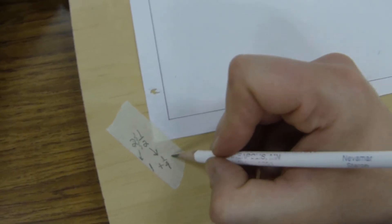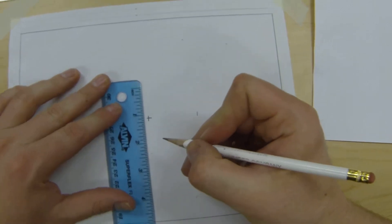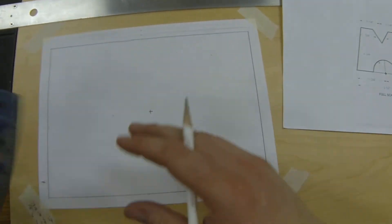Add these guys together and we get 1 and 1/4. So I'm going to turn my scaler, my ruler here, measure and mark 1 and 1/4, and do the same thing going vertically.